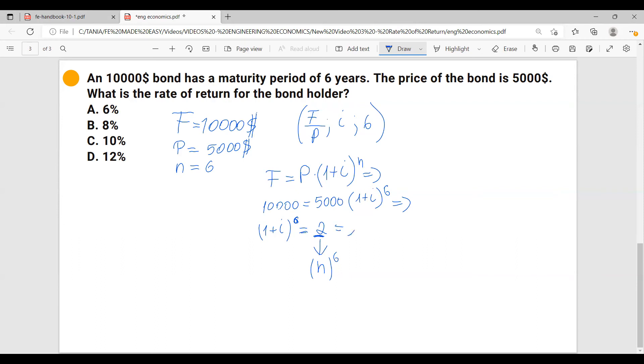So I will do the following. 1 plus i power six equals to 1.122 power six. So now we can just equate the parenthesis: 1 plus i equals to 1.122. And from here, i equals to 0.122, which results in 12.12 percent. And the correct answer is D.